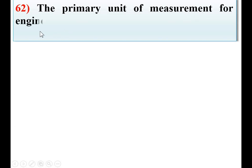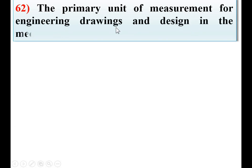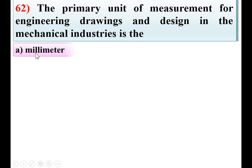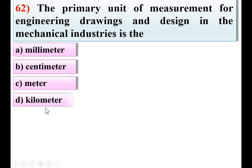Question 62: The primary unit of measurement for engineering drawing and design in the mechanical industries is — option A: millimeter, B: centimeter, C: meter, D: kilometer. We have drawn many drawings on drawing sheets and always written that all dimensions are in mm. So A is the right answer.